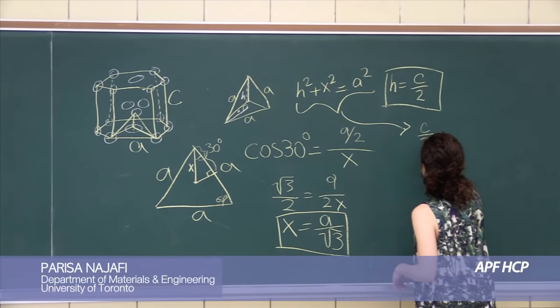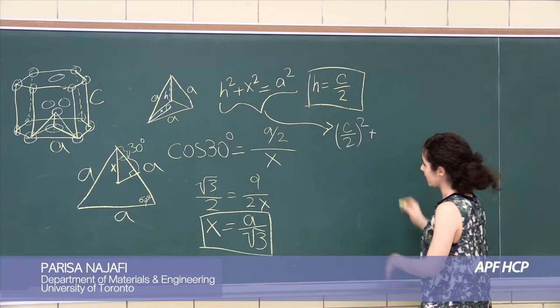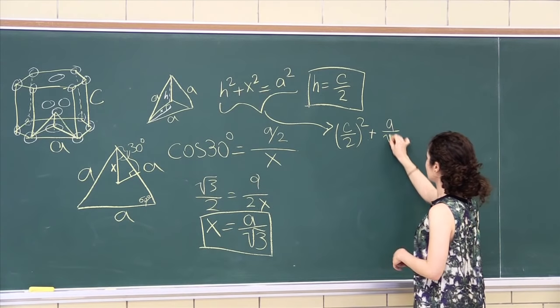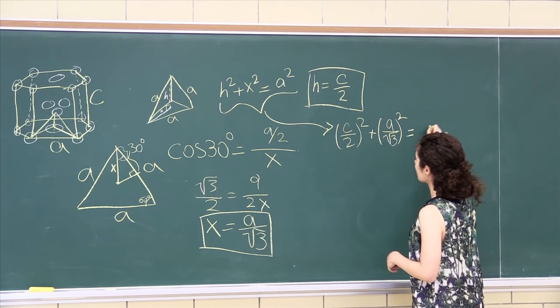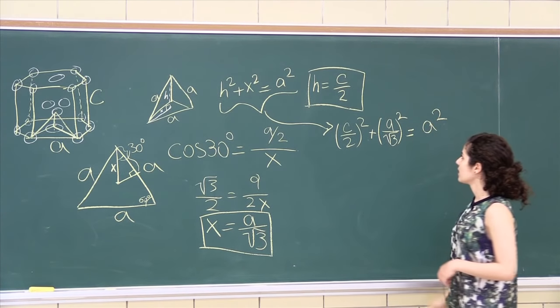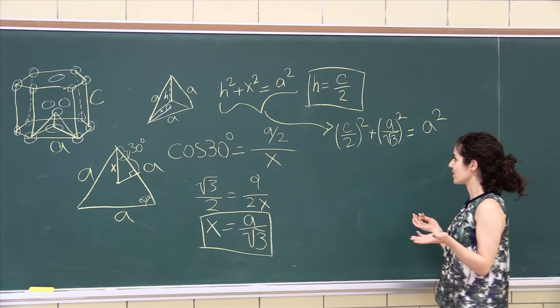plus X squared, so A over root 3 squared is A squared. Now we only have A's and C's in our equation, we can solve for the C to A ratio.